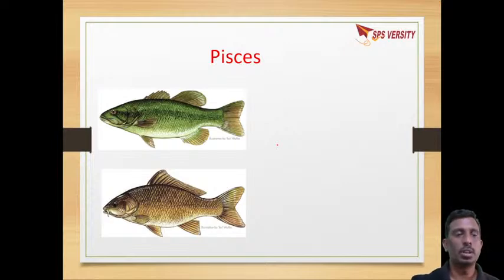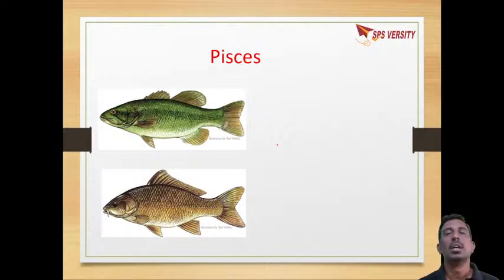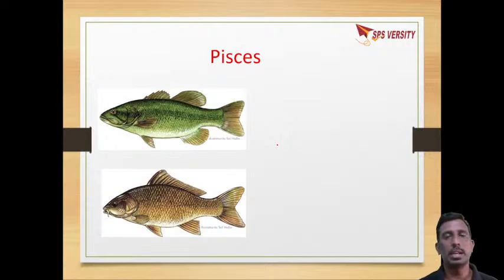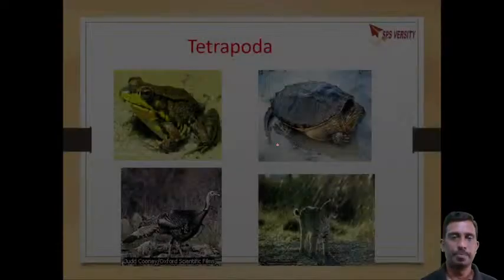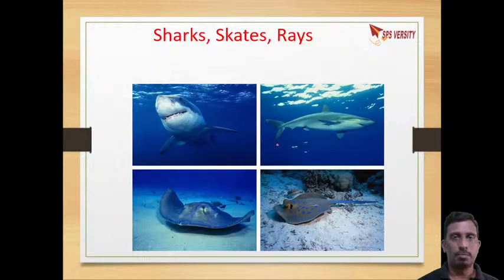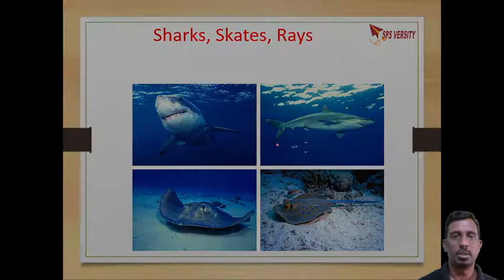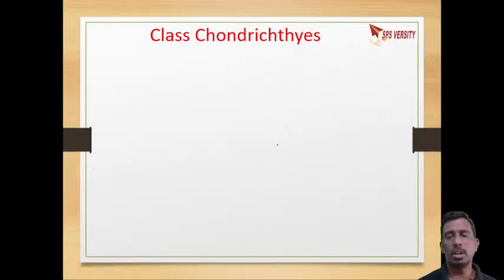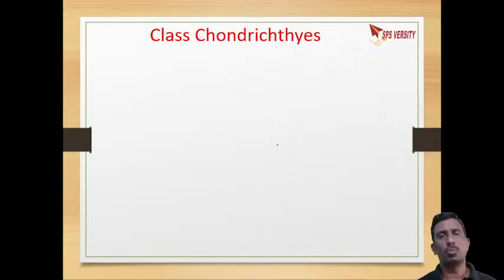Now we will come to Gnathostomata — which means organisms that have jaws. This is divided into two divisions: Pisces and Tetrapoda. Amphibians, Reptiles, Aves, and Mammals come under Tetrapoda. In Pisces there are two groups: Chondrichthyes and Osteichthyes.